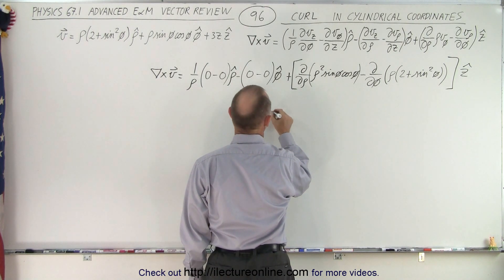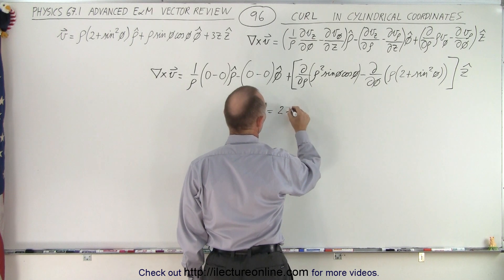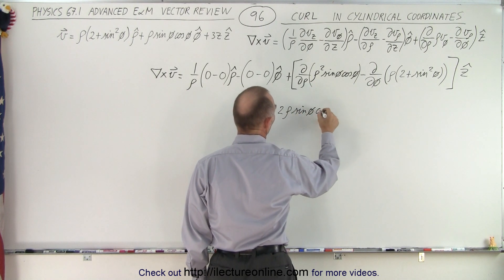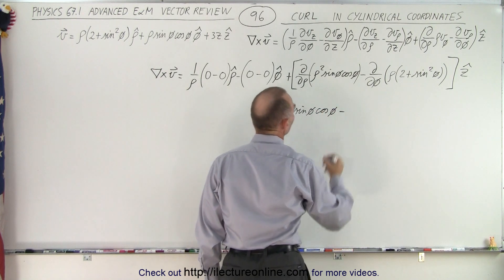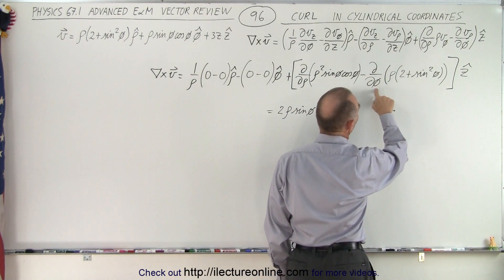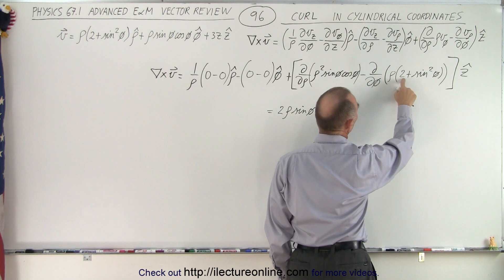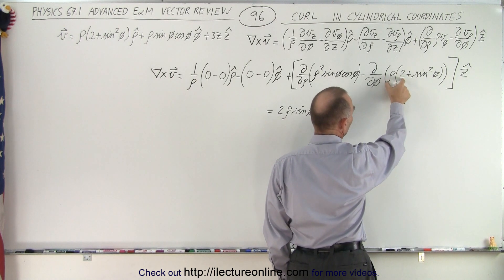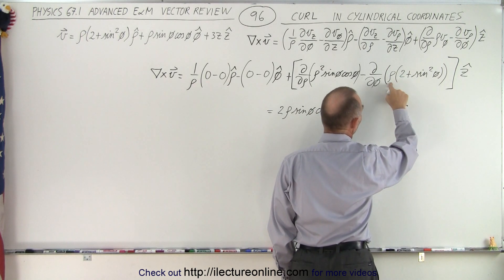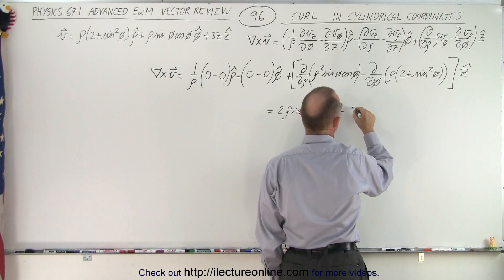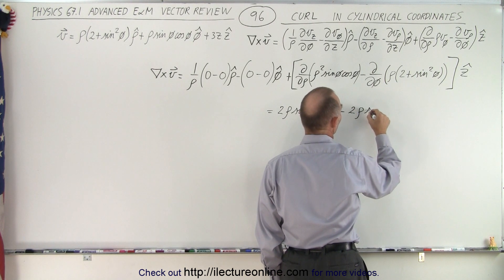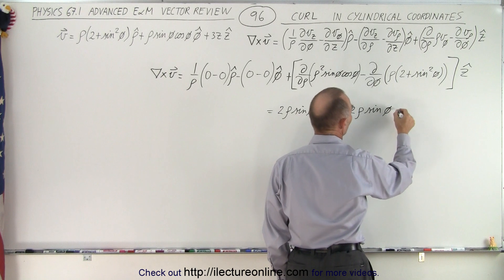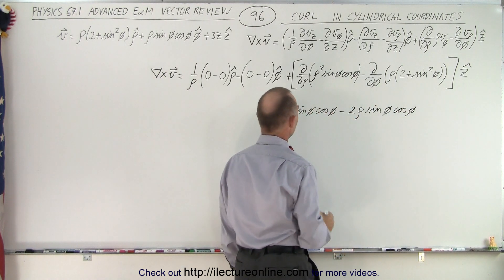So this is equal to that gives us two rho times this. This is just a constant at that point. Sine of phi, cosine of phi minus here, the partial derivative with respect to phi. So you have two times rho, which cancels out because we take the partial derivative of that. That's simply zero. And the partial derivative of this times this. That gives us two times rho times the sine to the first power times phi times the derivative of the sine, which is the cosine of phi.